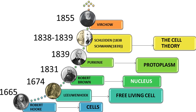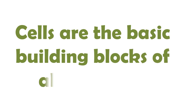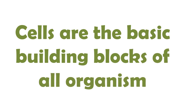In 1855, Virchow expanded the cell theory. That is, cells are produced from pre-existing cells. Pre-existing cells means already existing cells. Cells are the basic building blocks of all organisms.